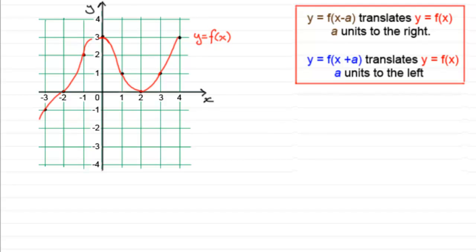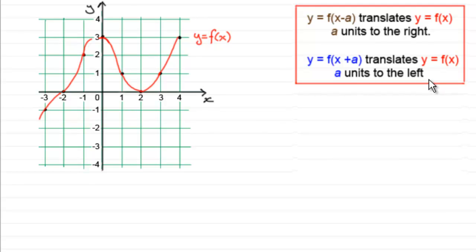Hi. Now I'm often asked, why does y equals f of x minus a translate any graph of the form y equals f of x, a units to the right? And similarly, why does y equals f of x plus a translate the graph y equals f of x, a units to the left? It doesn't seem to make any sense. Well hopefully this tutorial will fix that.